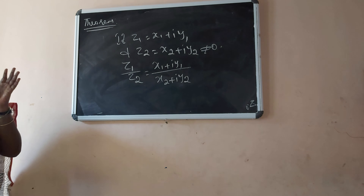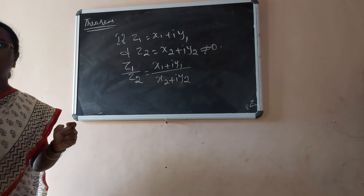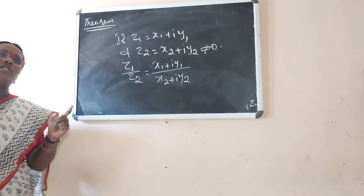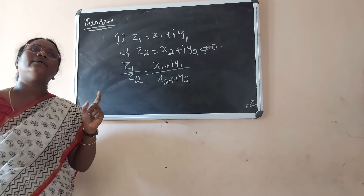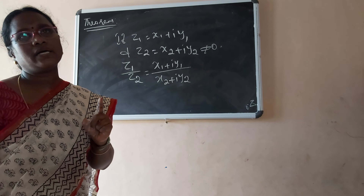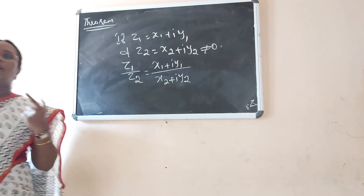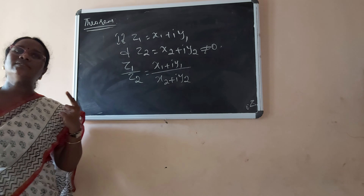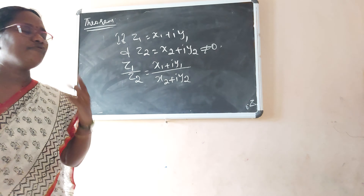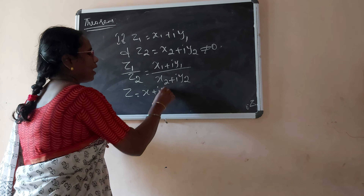If Z1 equals X1 plus iY1 and Z2 equals X2 plus iY2, where Z2 is not equal to 0, then we can represent the quotient form of a complex number. Z1 by Z2 is nothing but (X1 plus iY1) divided by (X2 plus iY2). Multiply and divide by X2 minus iY2 to get the result.